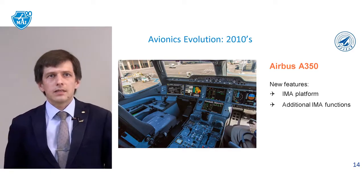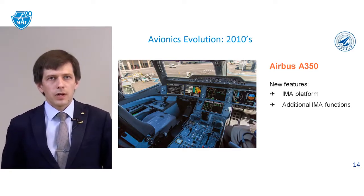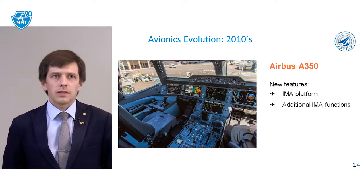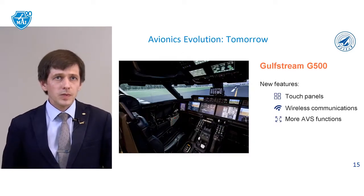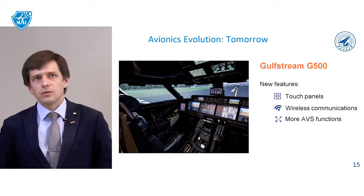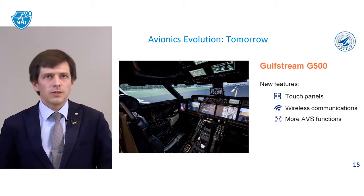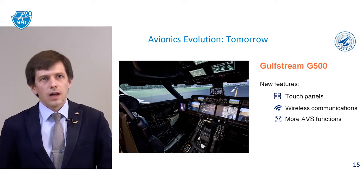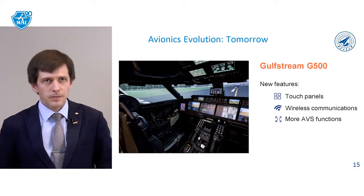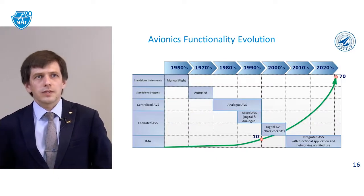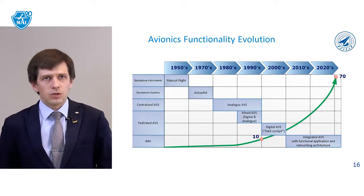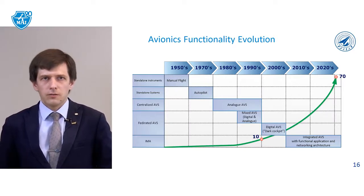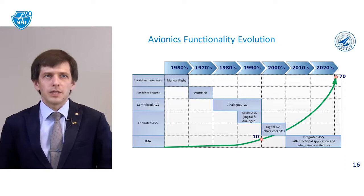Avionics today features an integrated model avionics platform with additional IMA functions inside the main processors and liquid crystal displays. In the future, for example, the new Gulfstream G500 will have touch panel screens, wireless communication, and a number of new functions. On this slide we can find the avionics functionality evolution – how many functions we have now and how complicated avionics is, compared to only a few functions in the beginning.